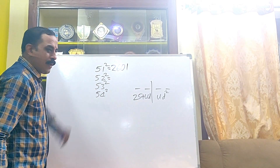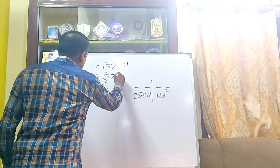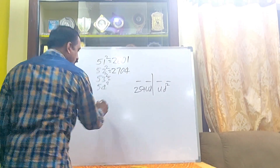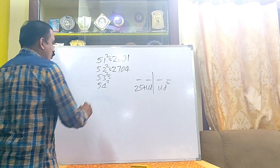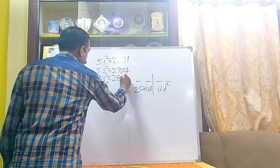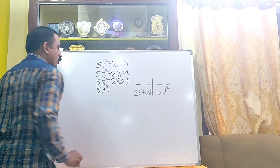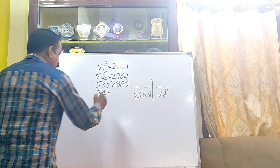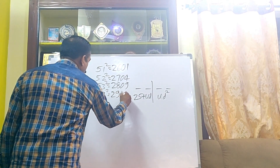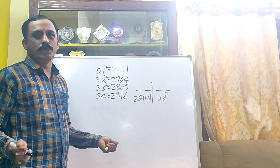For 52: 25 plus 2 is 27, and 2 squared is 04 — so 52 squared is 2704. For 53: 25 plus 3 is 28, and 3 squared is 09 — so 53 squared is 2809. For 54: 25 plus 4 is 29, and 4 squared is 16 — since 16 is already a 2-digit number, no zero is needed, so 54 squared is 2916.